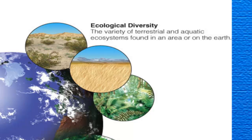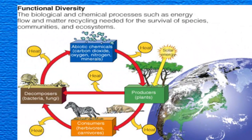The storehouse for all of that genetic and species diversity is the ecological diversity — all of the various terrestrial and aquatic ecosystems that are found on Earth. And finally there's functional diversity, which is the biological and chemical processes like photosynthesis, which assist with the flow of energy in an ecosystem, or the decomposers and their ability to recycle matter. Each of these pieces of functional diversity are needed for the survival of individual species and the support of whole ecosystems.